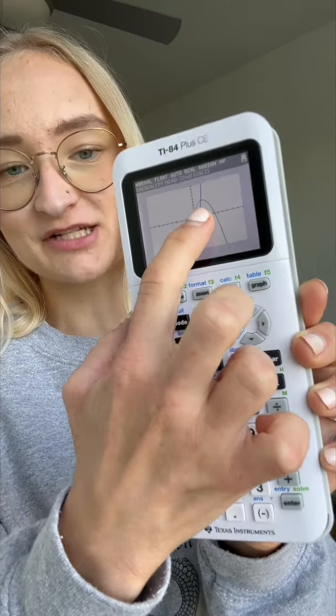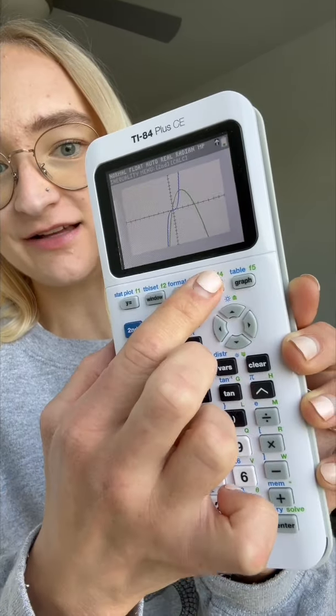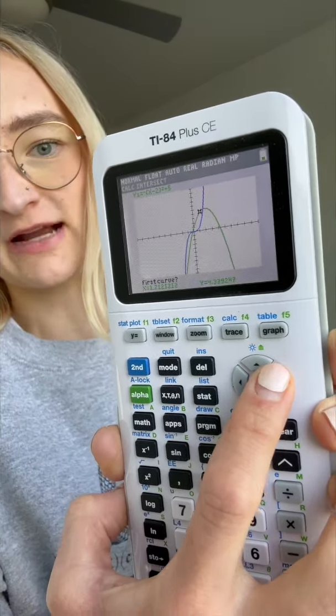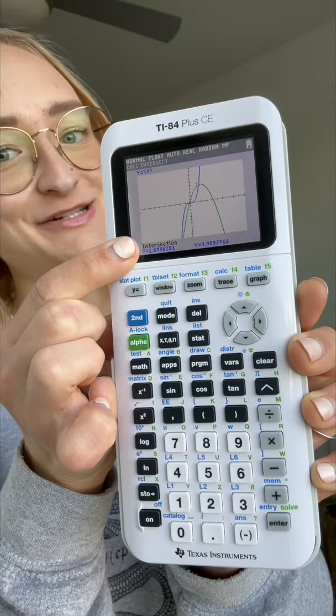And you should also be able to find intersections of two graphs. To find this point of intersection, we go back to second, calc, intersect. Now mouse over to the point on the graph near the intersection. And there's our intersection point.